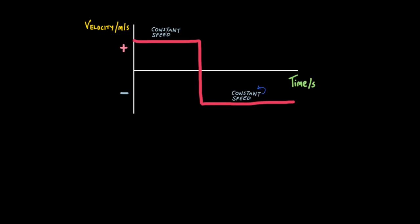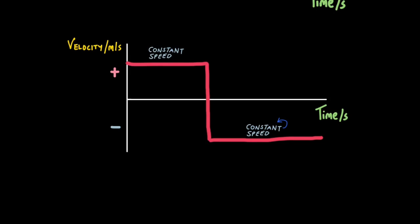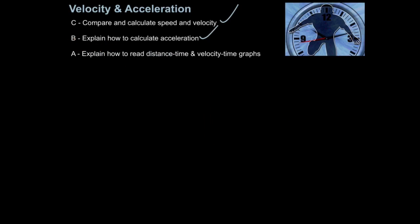One final consideration: sometimes velocity-time graphs go into the negative. Remember, velocity has direction — it can be positive, meaning the object travels in one direction, and negative in the other direction. So a graph showing positive then negative values means the cat is moving at a constant speed in one direction, then moving in the other direction at a constant speed. Speed would never go into the negative because it's not a vector value — only vector values go negative to indicate direction as well as magnitude.